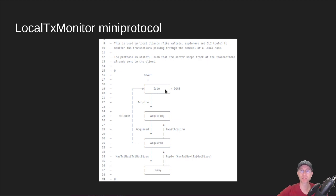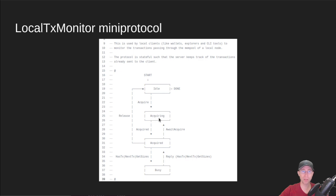Each of these states has an agency — in other words, whose turn is it to talk? In the idle state, the client has agency. So if I'm the client talking to the node and I'm in the idle state, it's up to me to send a message, specifically the acquire message. Once I've sent that acquire message, both the client and the server move into the acquiring state. In the acquiring state, the server has agency. The server responds with the acquired message, and we end up in the acquired state.